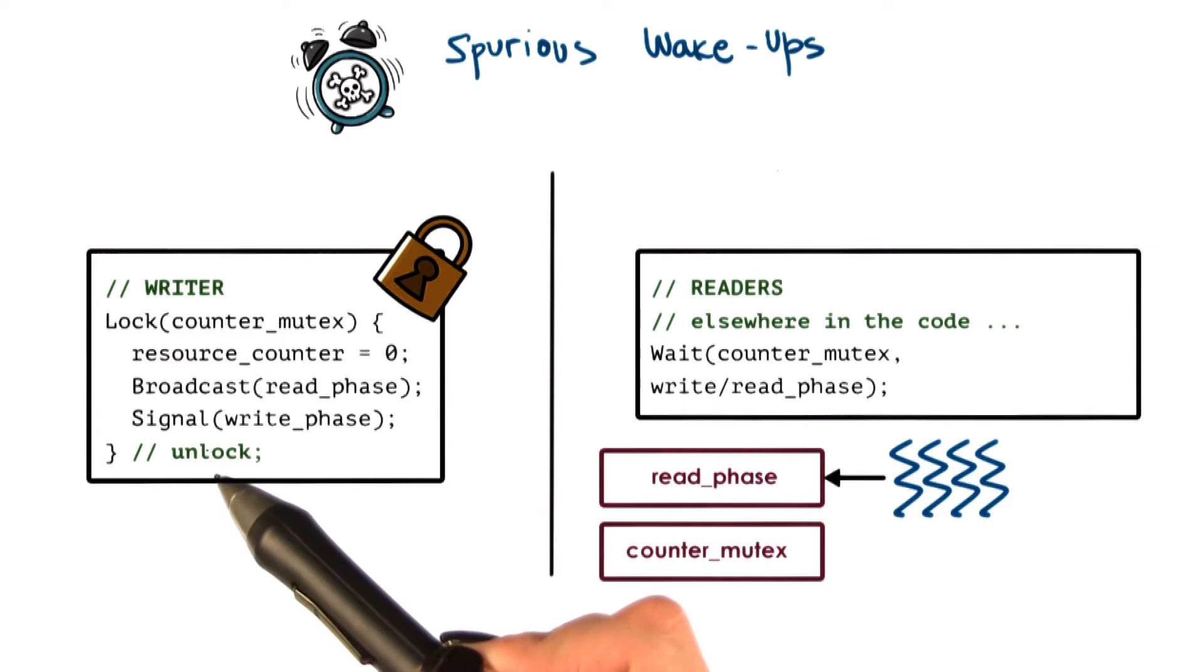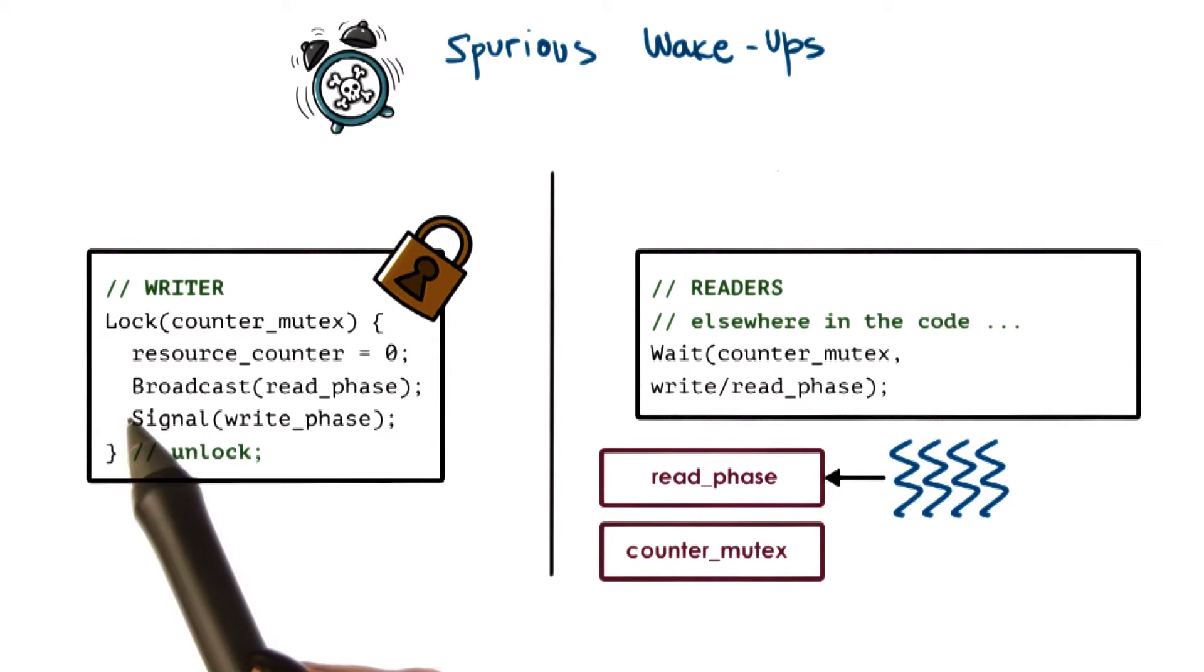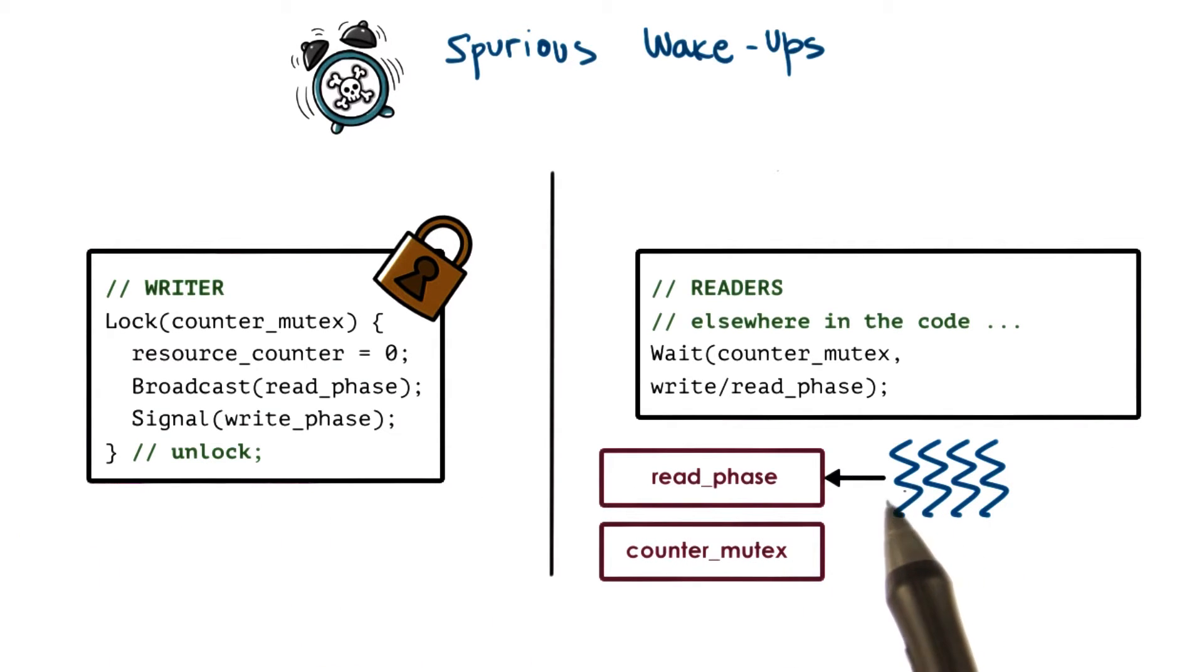we have the writer on one core. It holds still the lock, and it's executing basically this portion of the code. And at another core, on another CPU,